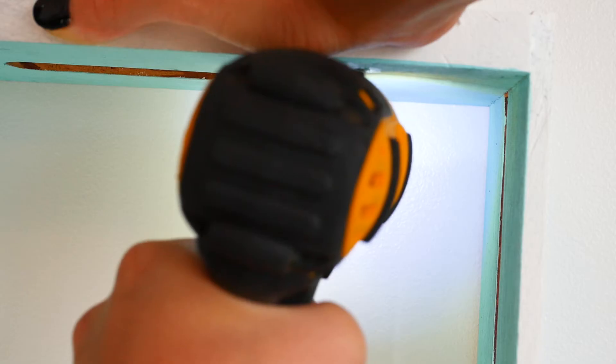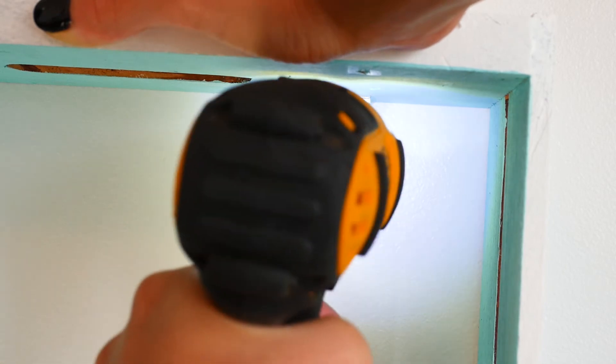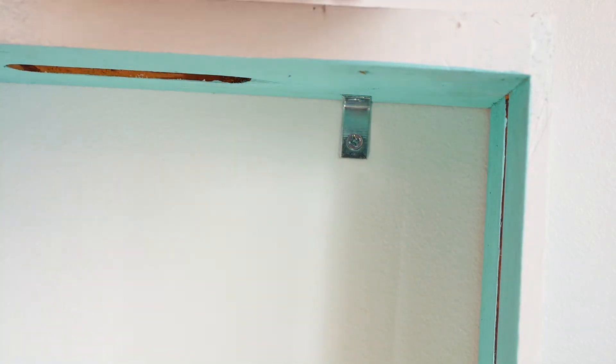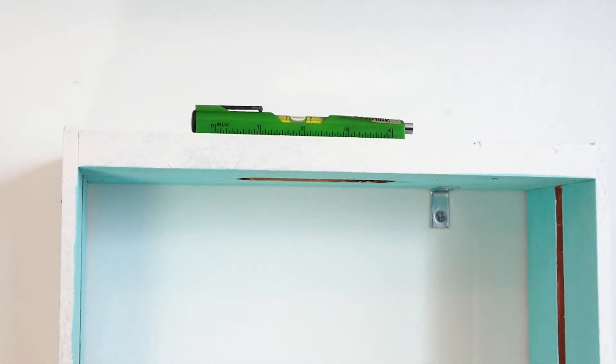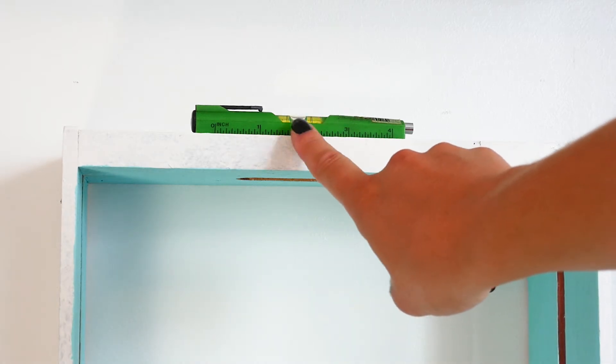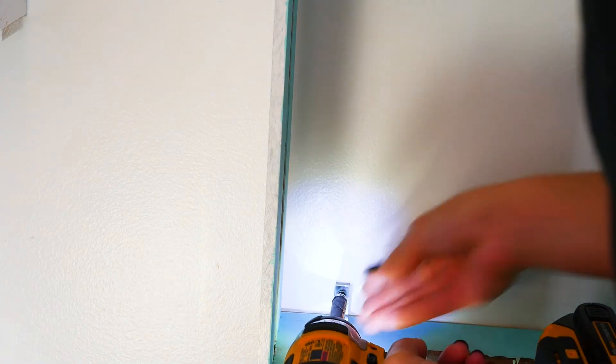Then I take the frame and screw the first corner brace into the wall. Using a bubble level, adjust the frame until the bubble is in the center, then secure the second brace.